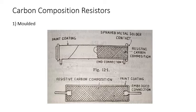Three methods are employed to provide end connections. First, metal spraying at the ends and soldering tinned copper wire around them. Second, molding of the enlarged ends of the connecting wire directly into the carbon body. Third, pressing of a metal cap over the metal-sprayed end. The outer cover is a paint coating; the inner side is the resistive carbon composition, with spread metal solder contacts at the ends.